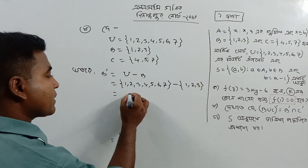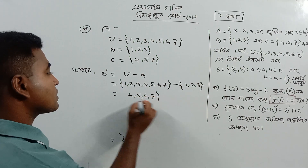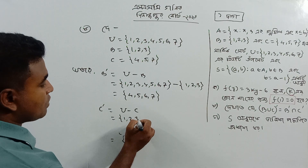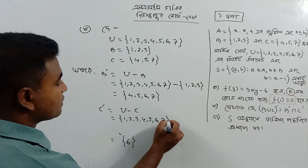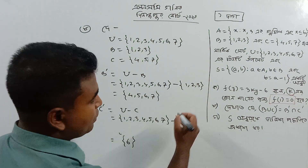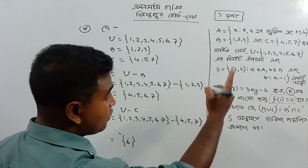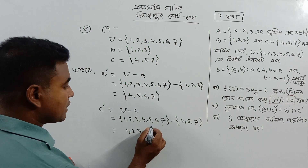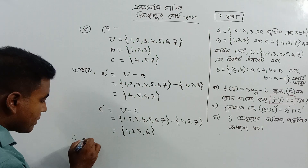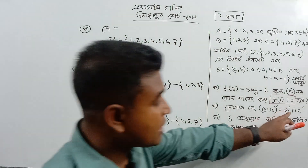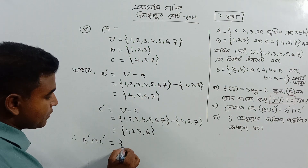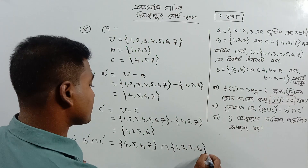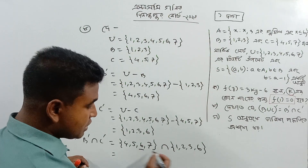The universal set U has {1, 2, 3, 4, 5, 6, 7}. C prime means U minus C. U has {1, 2, 3, 4, 5, 6, 7} and C has {4, 5, 7}, so C prime is {1, 2, 3, 6}. The equation is B prime intersection C prime. B prime is {4, 5, 6, 7} and C prime is {1, 2, 3, 6}. Intersection means common elements, which gives us 6.